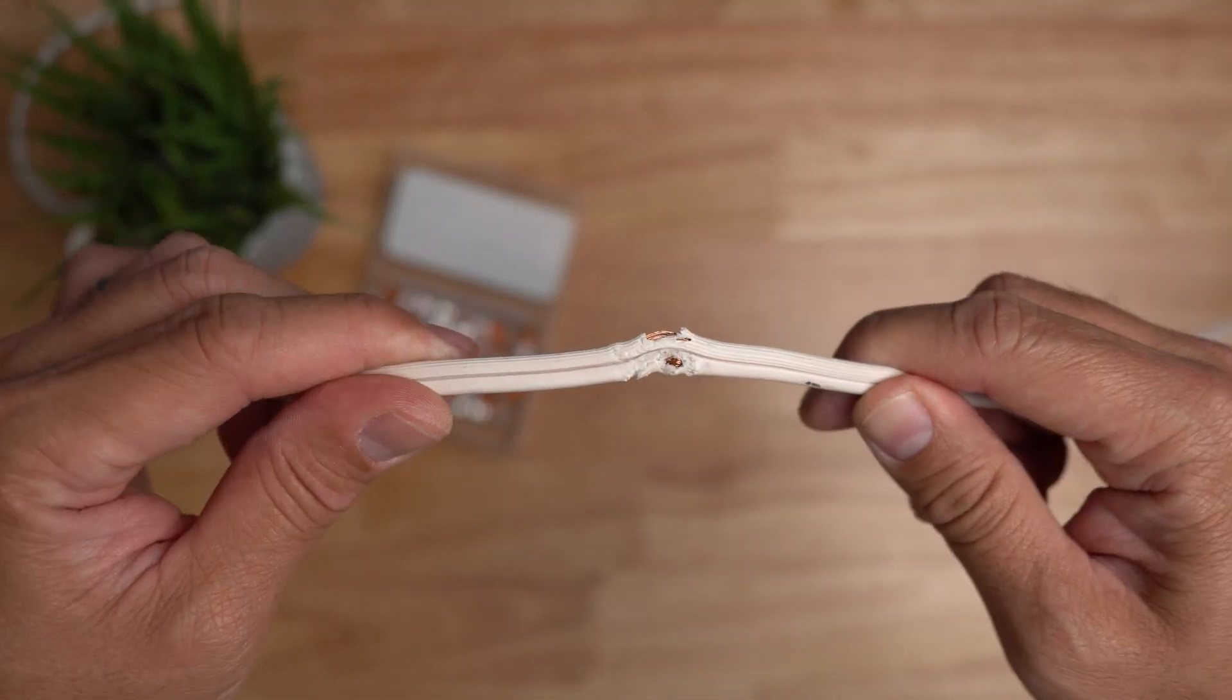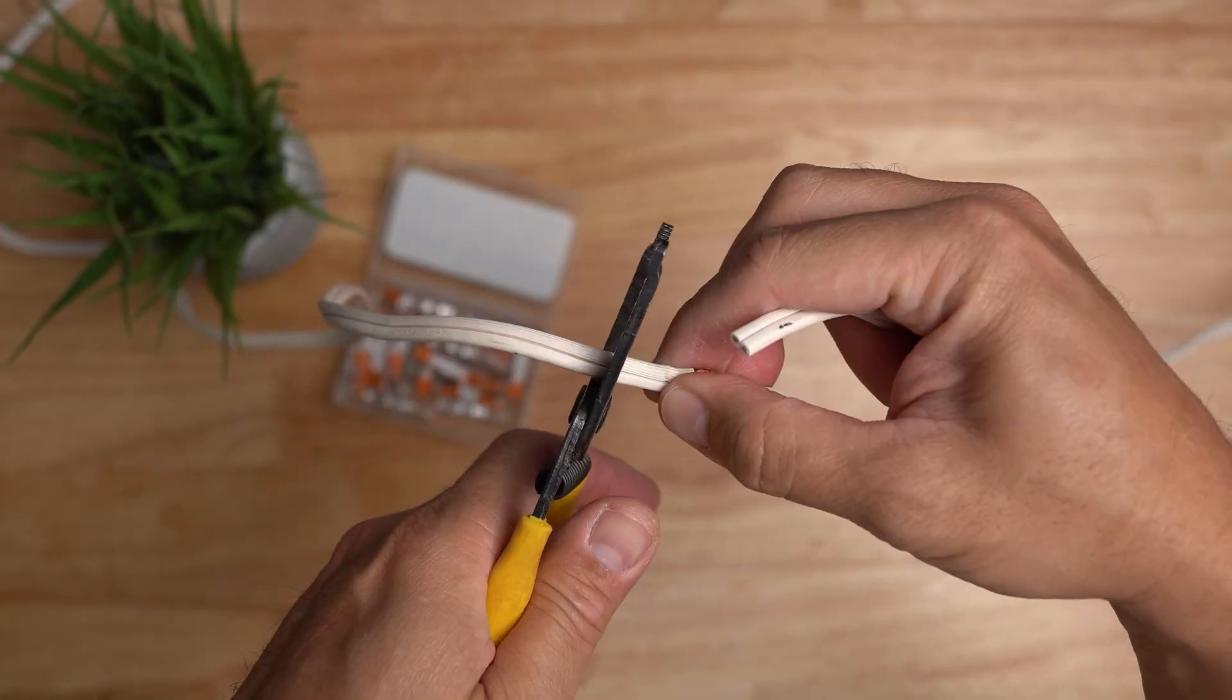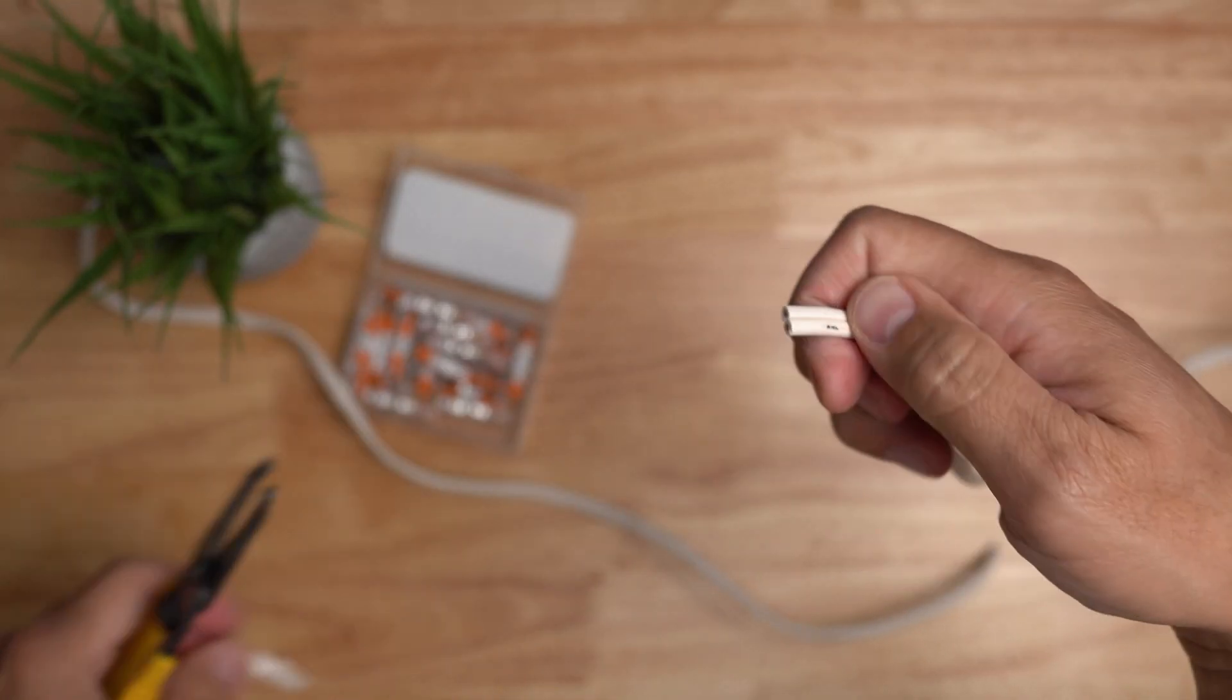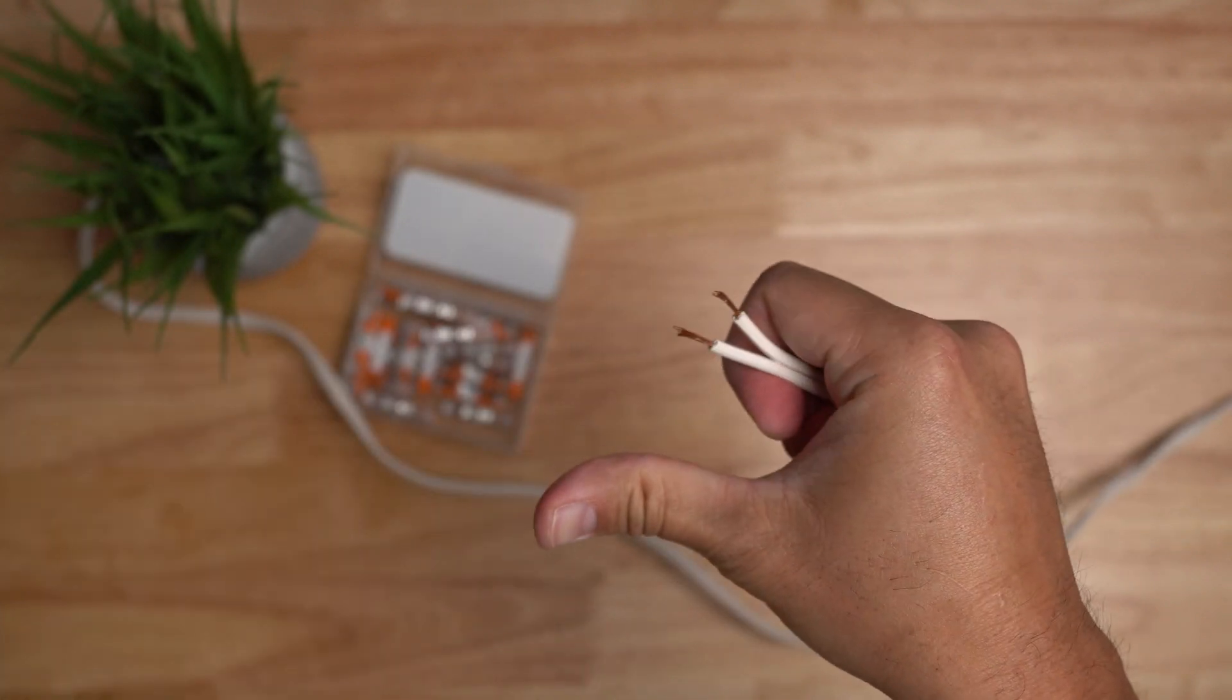What if your lamp wire got chewed out by your dog? Well, you can fix it by cutting the chewed up part, strip the wires to the recommended length using the guide on the side.